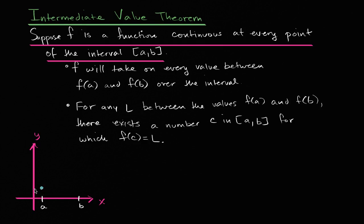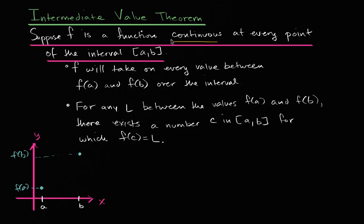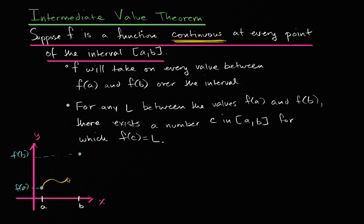The function is definitely going to be defined at f of a, so it will definitely have an f of a right here. Maybe f of b is higher — that would be our f of b. And they tell us it is a continuous function. If we're continuous over an interval, we take the value at one point, and if it's continuous, we need to be able to get to the value of the function at the other point of the interval without picking up our pencil. I can do all sorts of things, and as long as I don't pick up my pencil, this is a continuous function.